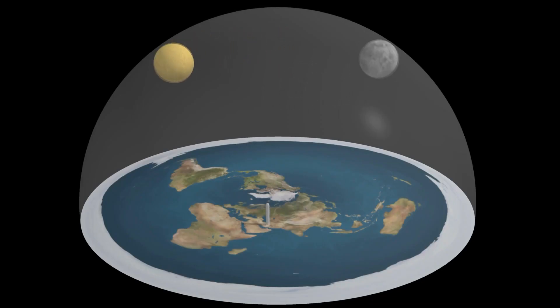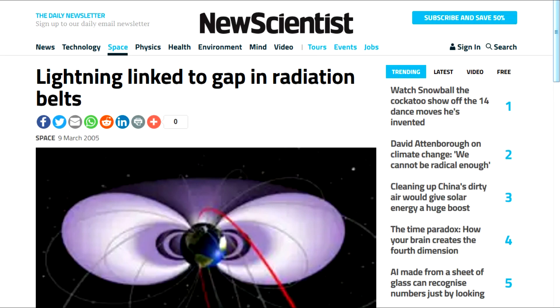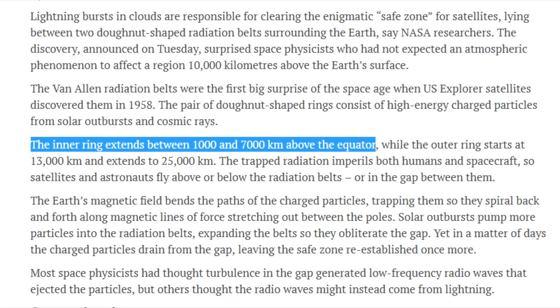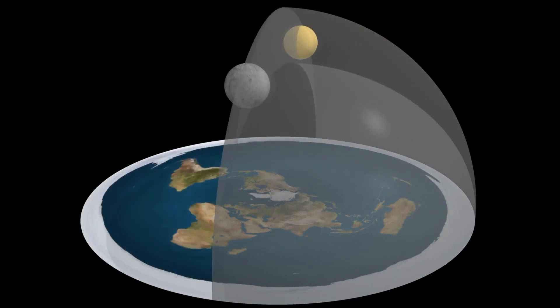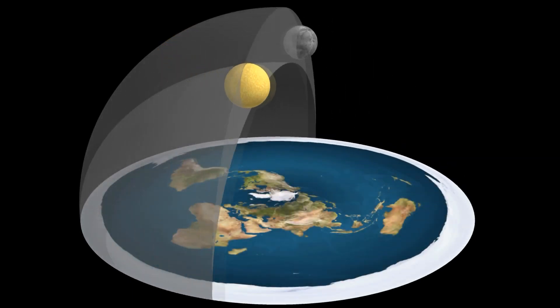If the Van Allen belt was actually the firmament, as flat earthers have backpedaled, why would it be an obstacle in trying to reach the moon? Why would it be a barrier to something that's below it? Hell, the real inner Van Allen belt actually begins at only 1000 kilometers and extends to some 7000 kilometers. If it's really the firmament, this places the alleged altitudes of the sun and moon within it.